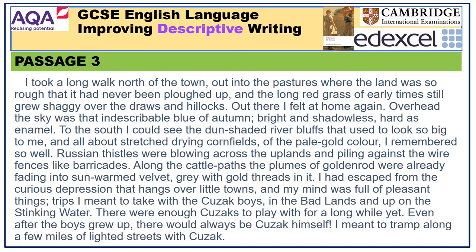I took a long walk north of the town, out into the pastures where the land was so rough that it had never been ploughed up, and the long red grass of early times still grew shaggy over the drawers and hillocks. Out there, I felt at home again. Overhead, the sky was that indescribable blue of autumn, bright and shadowless, hard as enamel. To the south, I could see the dun-shaded river bluffs that used to look so big to me, and all about stretched drying cornfields of the pale gold colour I remembered so well. Russian thistles were blowing across the uplands and piling against the wire fences like barricades. Along the cattle paths, the plumes of goldenrod were already fading into sun-warmed velvet, grey with gold threads in it.